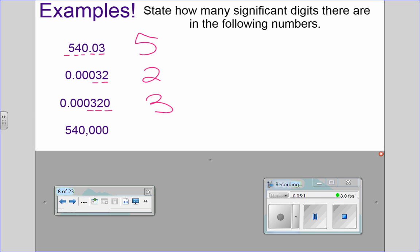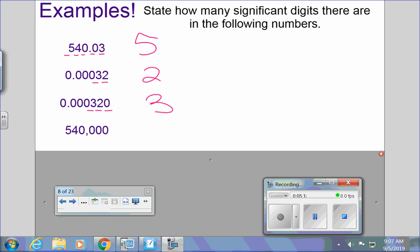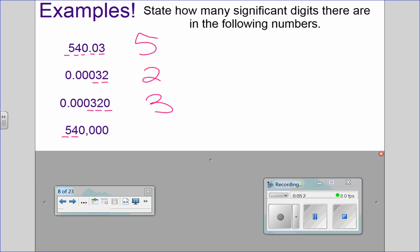Good one. 540,000. Give that one a try. All right. So on this one, the five is going to count. The four is going to count. But these zeros are not going to count because they are not after the decimal. So two.